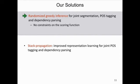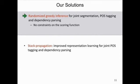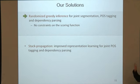In the rest of the talk, I'm going to introduce two of our works to address this challenge. First, let's look at the randomized greedy approach for joint segmentation, tagging, and parsing. The key advantage of this method is that we have no constraint on the scoring function, whereas previous work usually needs constraints to keep the inference tractable. I'll show that this method is very simple but also very effective.